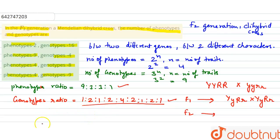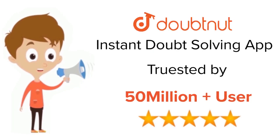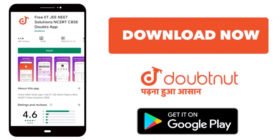Our correct answer for the question is option D — that is 4 phenotypes and 9 genotypes. I hope this answers your question. Thank you. For class 6 to 12, IIT JEE and NEET level, trusted by more than 5 crore students — download the DoubtNet app today.